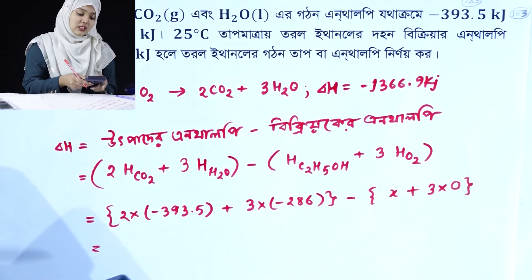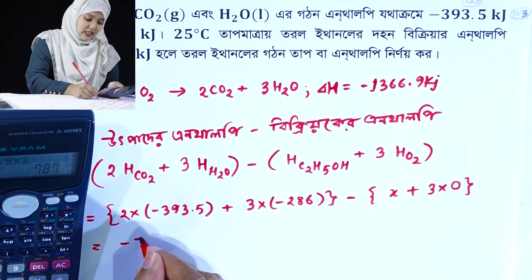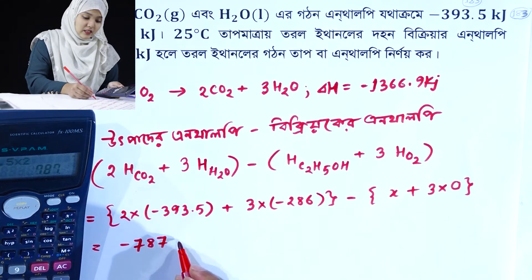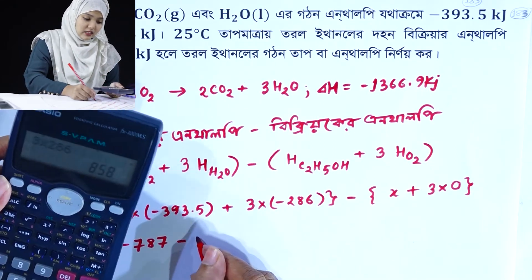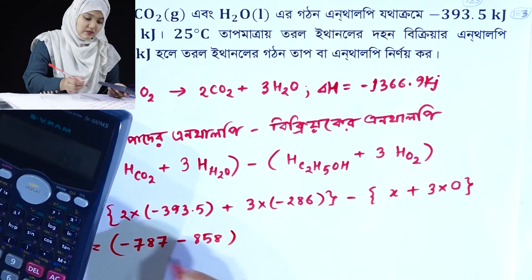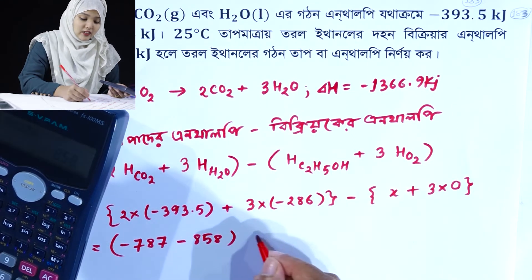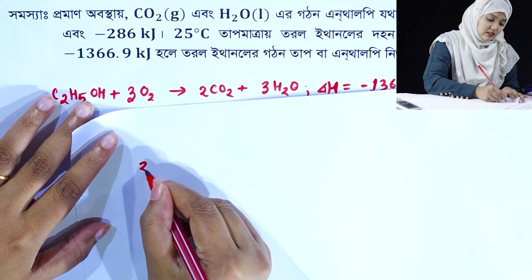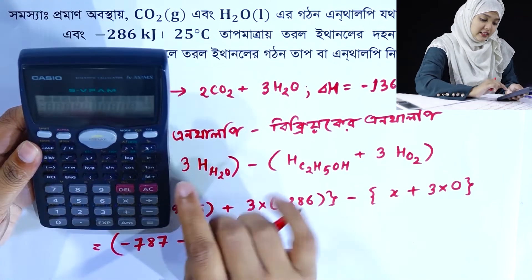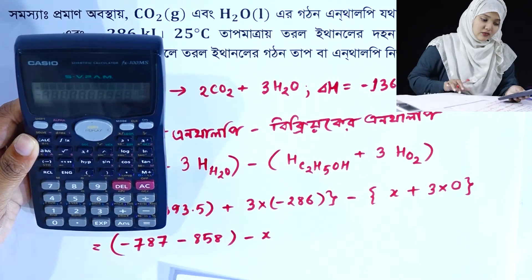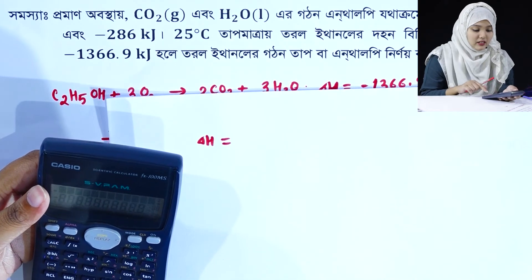Calculation: 393.5 into 2 is equal to minus 787, and minus 3 into 286 is 858. 3 into 0 is equal to 0. So delta H is equal to minus 858 minus 787. 3 into 0 is equal to minus 1645. Delta H is equal to 787 plus 858.